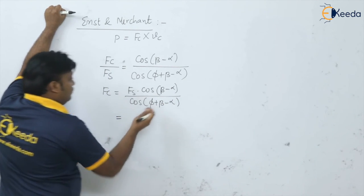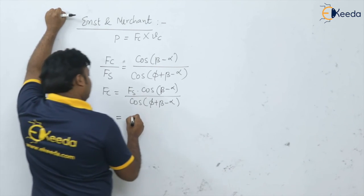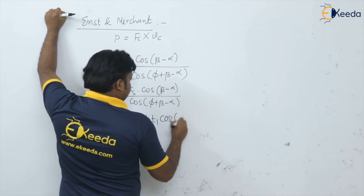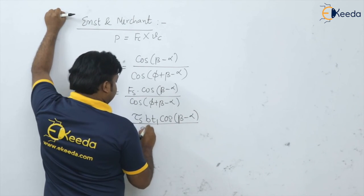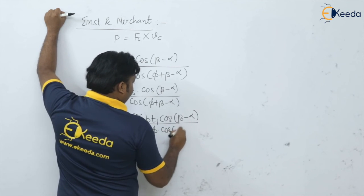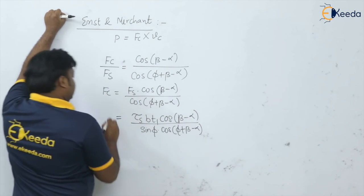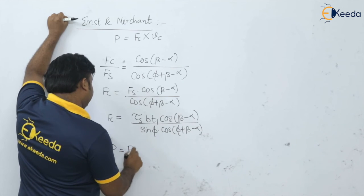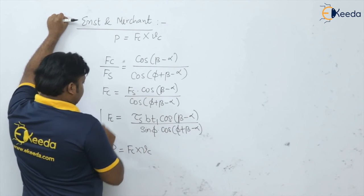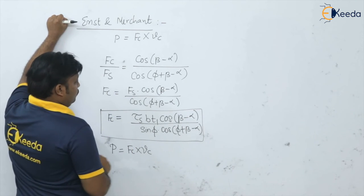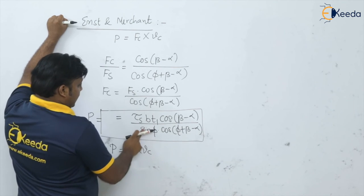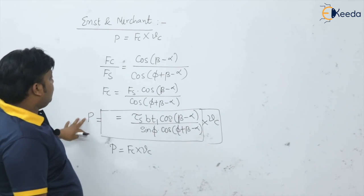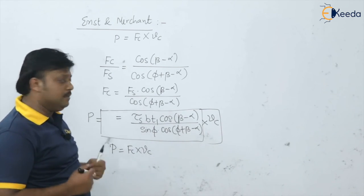Now I want the power: P = Fc × Vc. Substituting the expression for Fc and multiplying by Vc, I get the power. Looking at this power, what we want is for the power to be minimum. You can see that the power is a function of the shear angle φ — φ appears only in the denominator. So if the denominator is maximum, the power will be minimum.